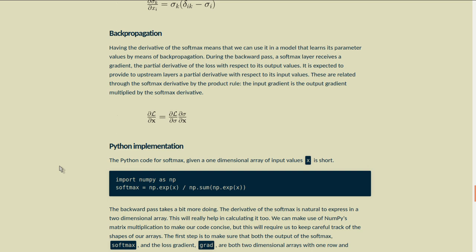During the backward pass, a softmax layer receives a gradient, the partial derivative of the loss with respect to its output values, and it's expected to provide upstream layers with a partial derivative with respect to its input values. These are related through the softmax derivative by the product rule. The input gradient is the output gradient multiplied by the softmax derivative, the softmax Jacobian.